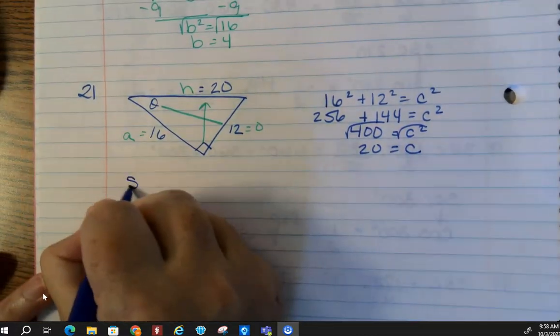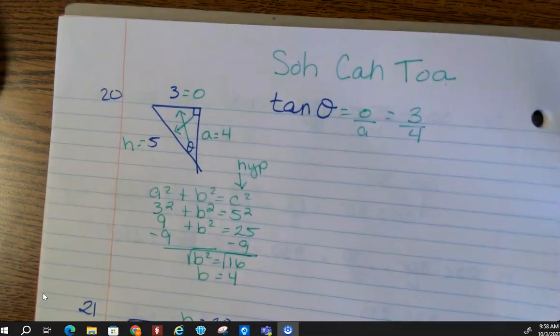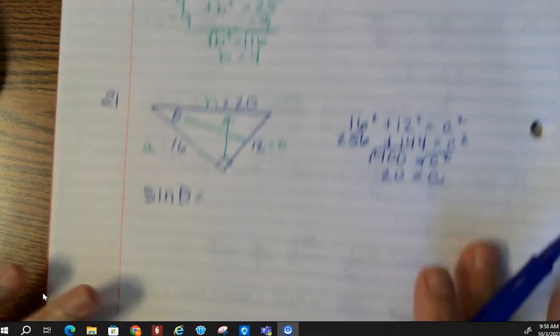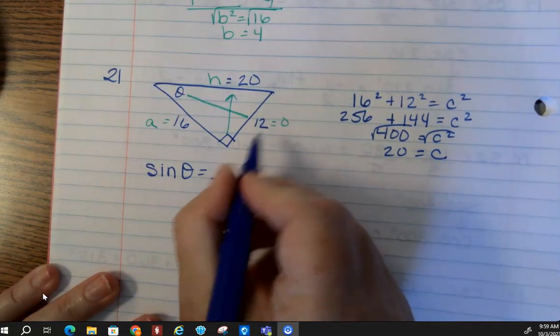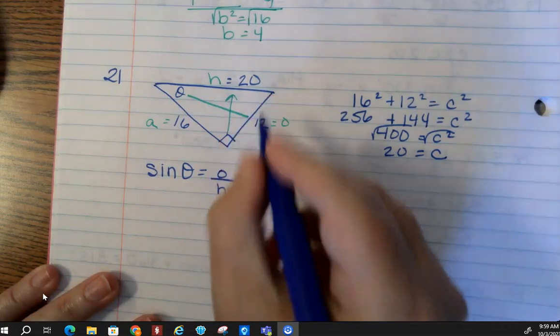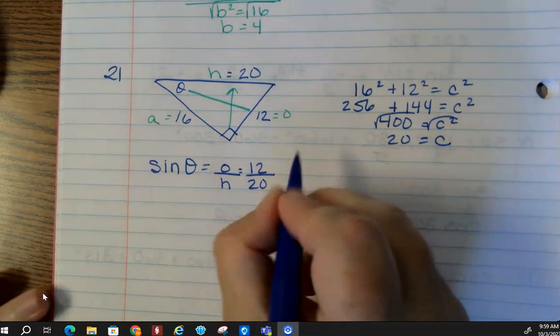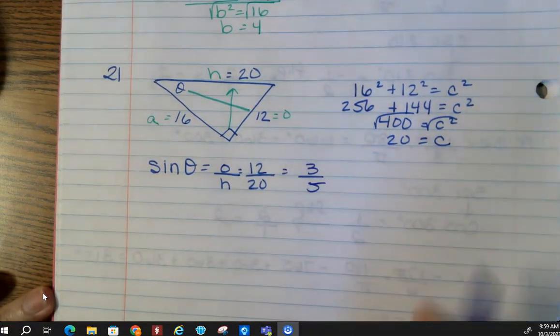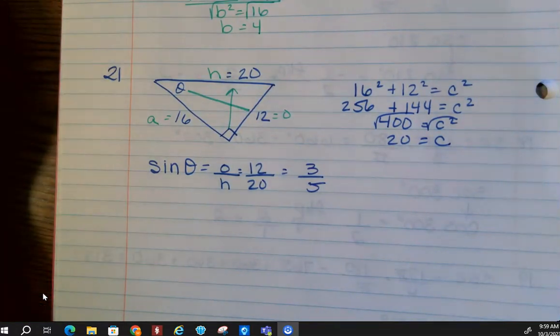Now, what was the question? The question here is sine. Now going back up here to SOH-CAH-TOA, sine is opposite over hypotenuse. So opposite here is 12, hypotenuse is 20, and then we can reduce this, and I get 3 over 5. Okay, I hope this helps, and I wish you good luck on your midterm.